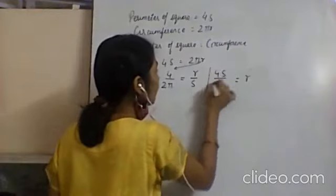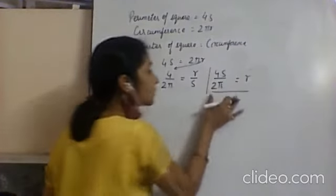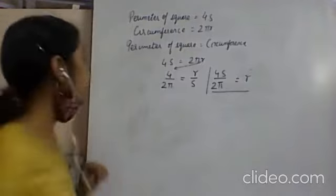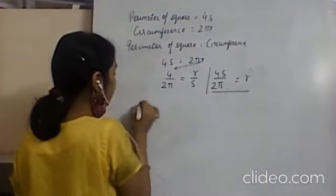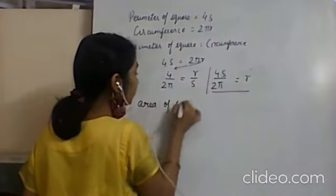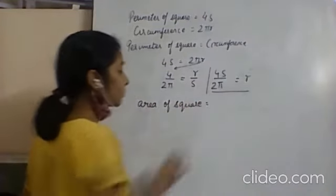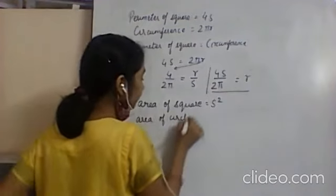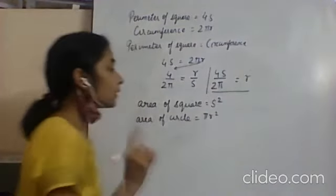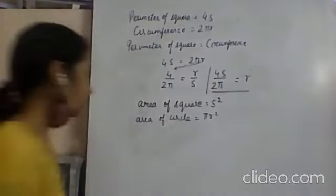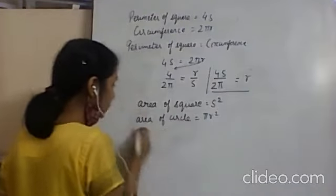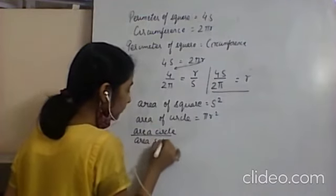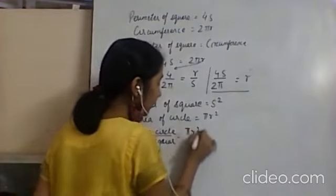So r equals 4s upon 2π. Now to find the ratio of areas, area of a square equals side squared and area of a circle equals πr². We need: area of circle upon area of square equals πr² upon s².